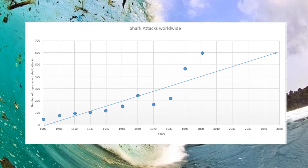In this scatter plot, titled 'Number of Unprovoked Shark Attacks,' it shows the number of worldwide unprovoked shark attacks. The vertical axis represents the number of shark attacks, increasing from 0 to 700. The horizontal axis represents the decades of incidence from the 1900s to the 2000s. The correlation is positive with a moderate to strong relationship. By 2050, this is most likely to increase.